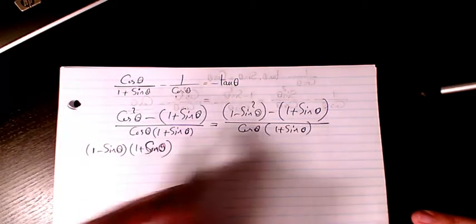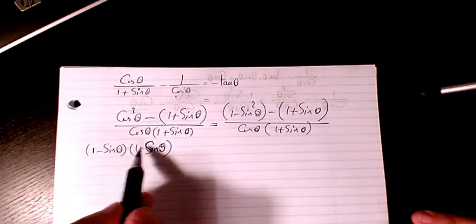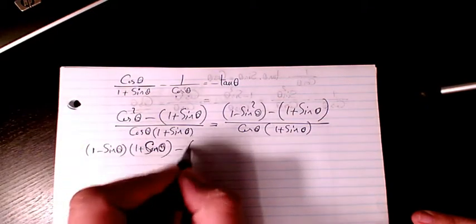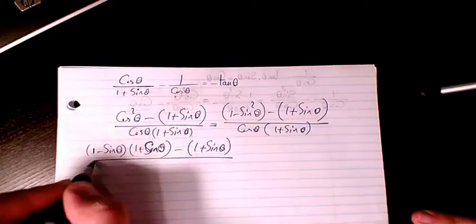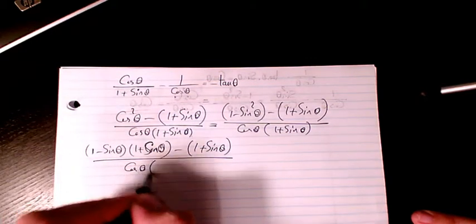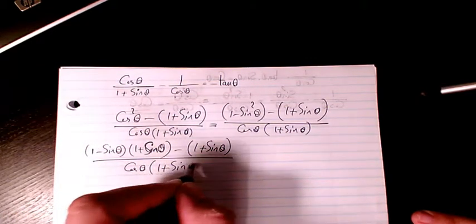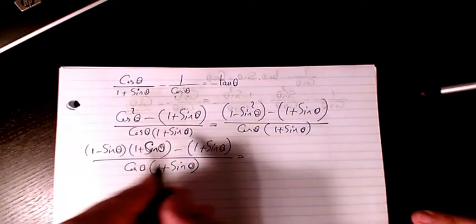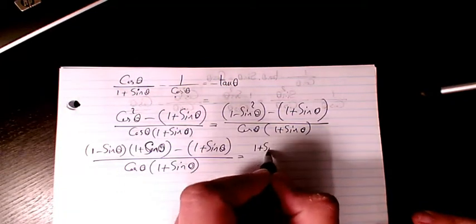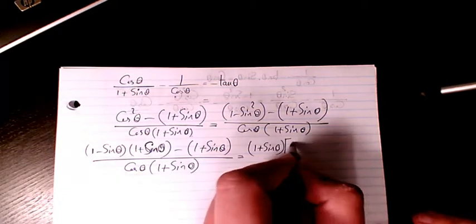So it's gonna be 1 squared minus sine squared, which equals 1 minus sine theta times 1 plus sine theta minus 1 plus sine theta, divided by cosine theta times 1 plus sine theta. Then if I factor 1 plus sine theta, it will be 1 minus sine theta minus 1.